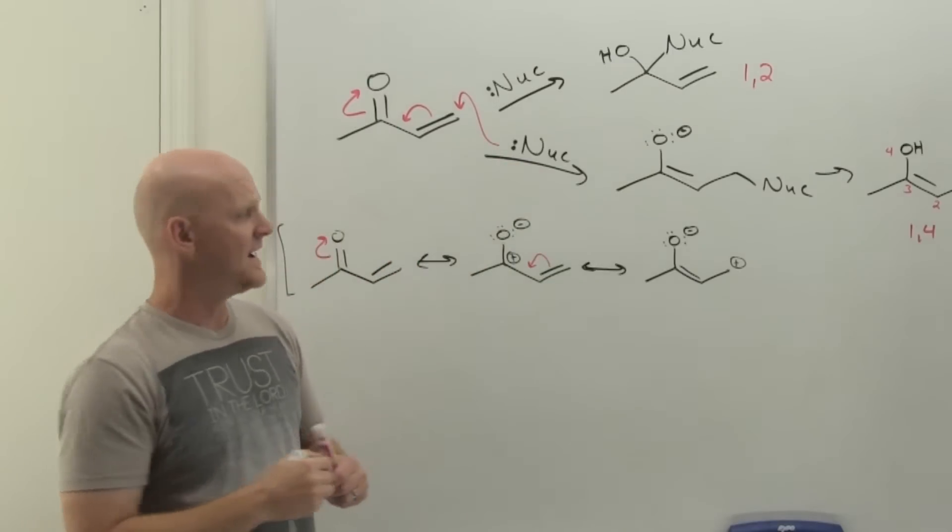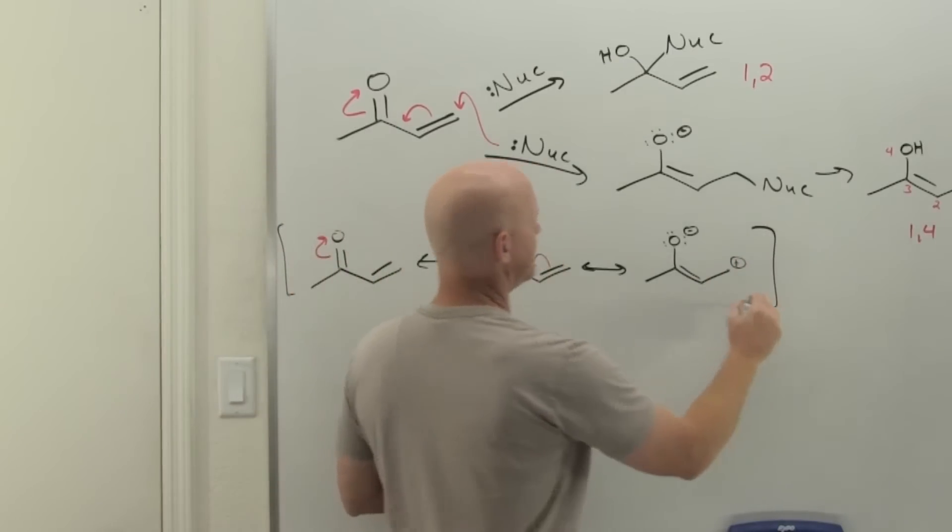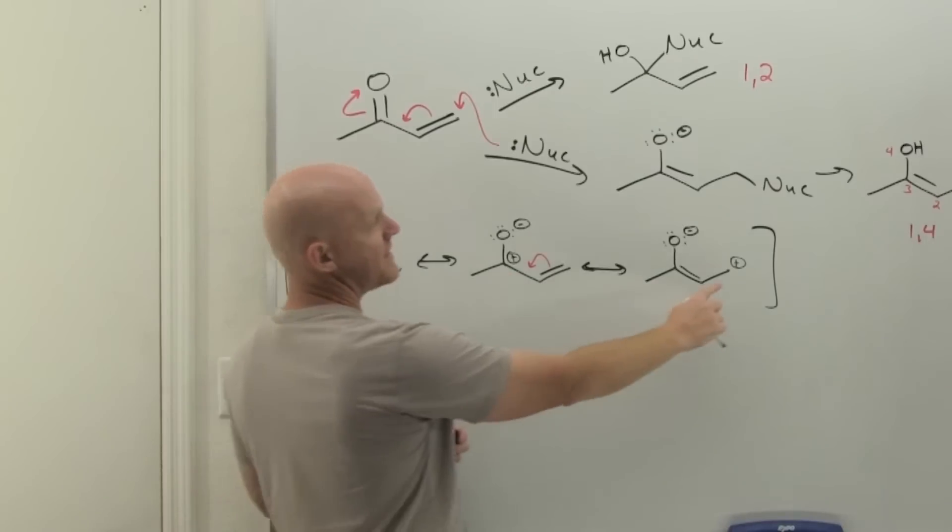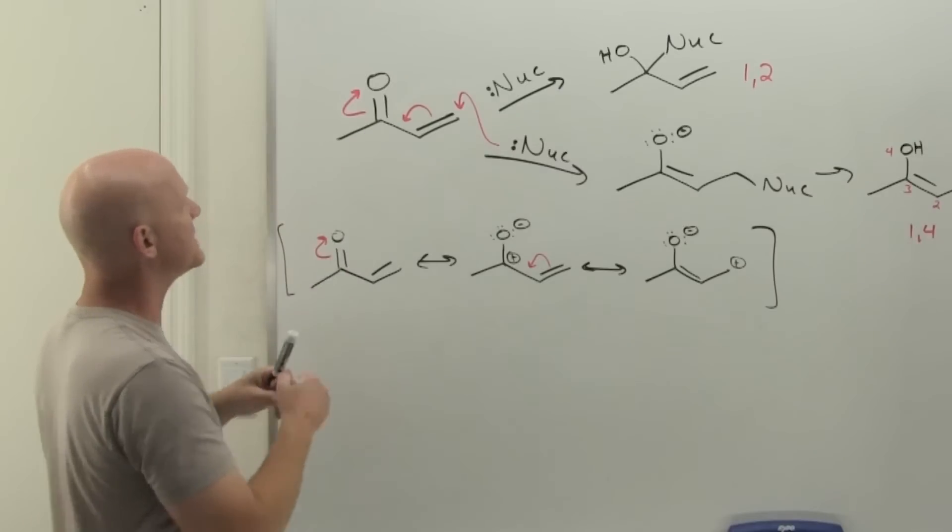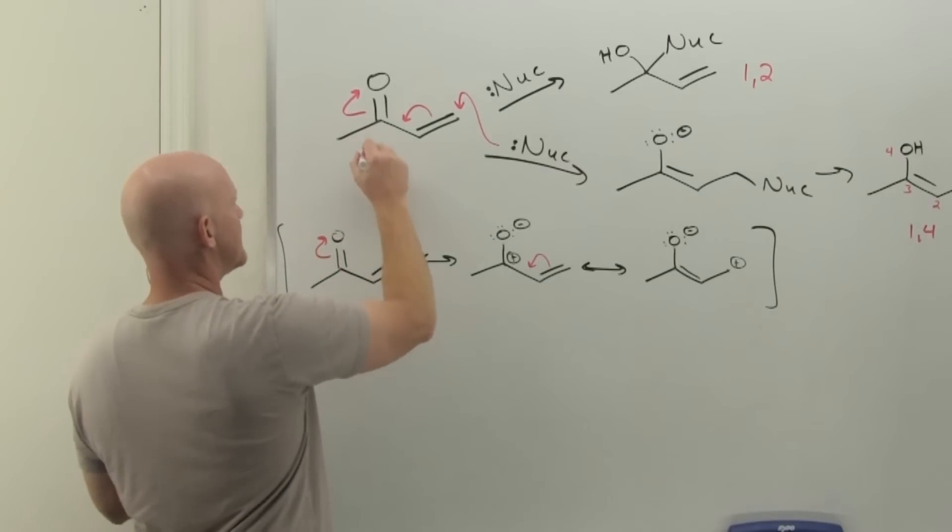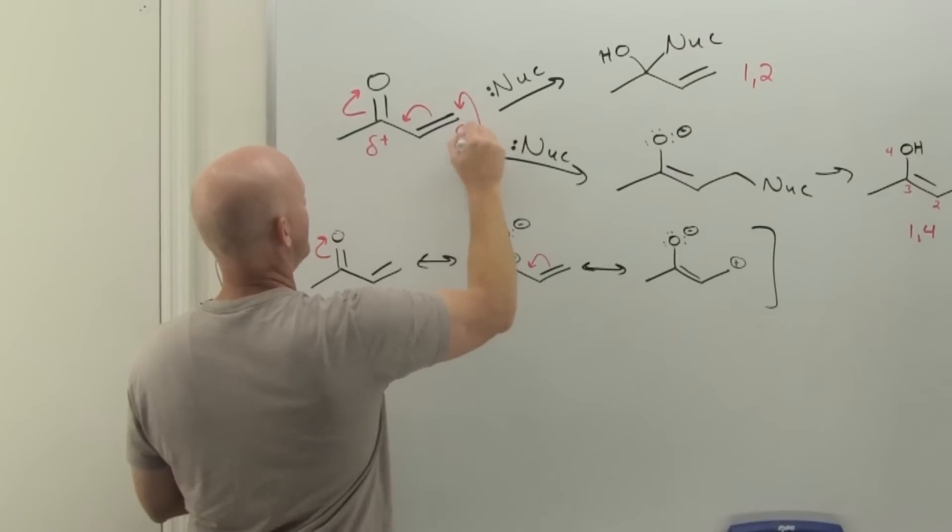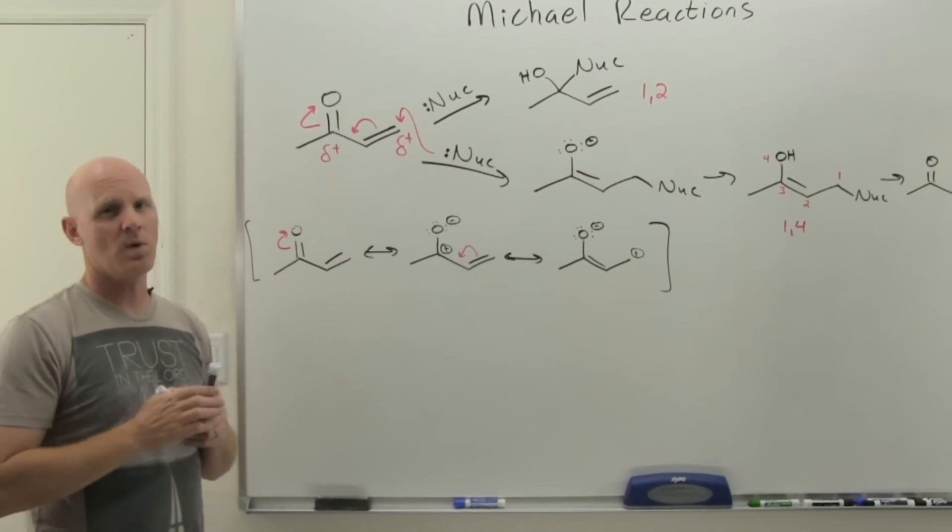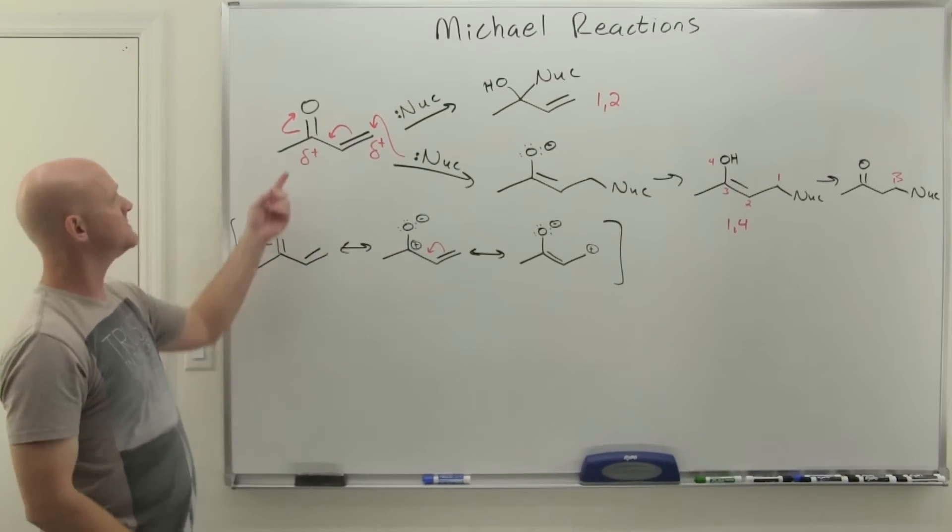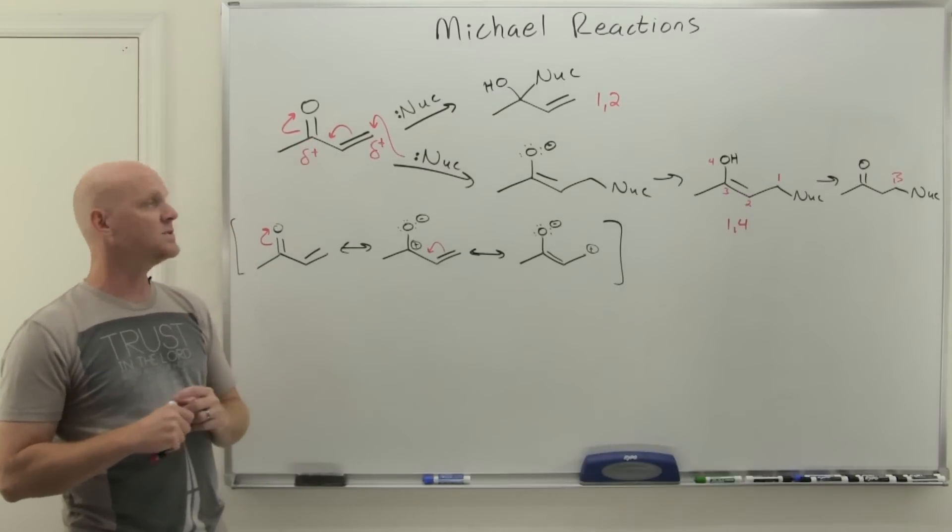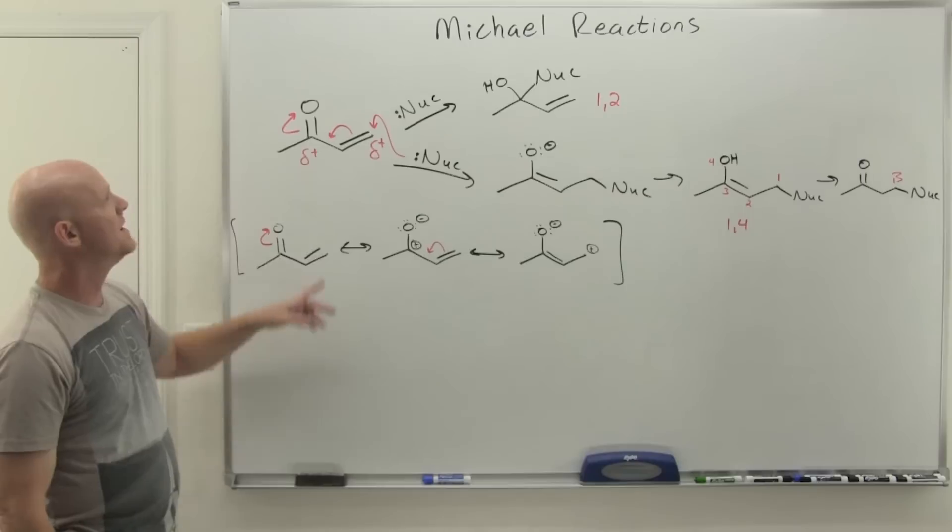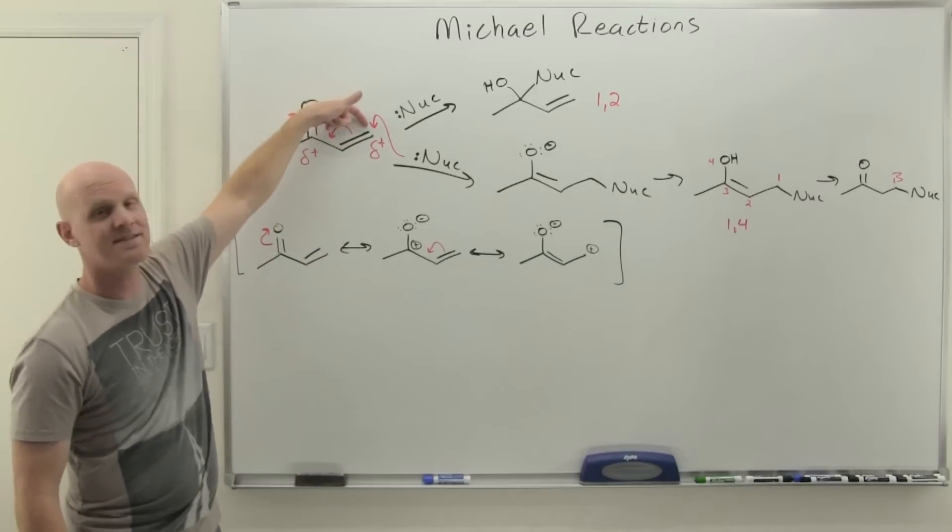And that's this guy here. Now you can see that not only is the carbonyl carbon partially positive, but the beta carbon is also partially positive as well. So when we look at this structure of a conjugated ketone, not only should you realize that the carbonyl carbon is partially positive, but that beta carbon is partially positive as well.